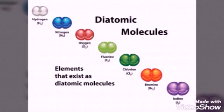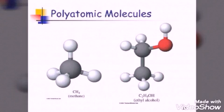If two atoms combine to form a molecule then it is said to be diatomic molecule. H2, N2, O2, Cl2, Br2 are considered as diatomic molecules.